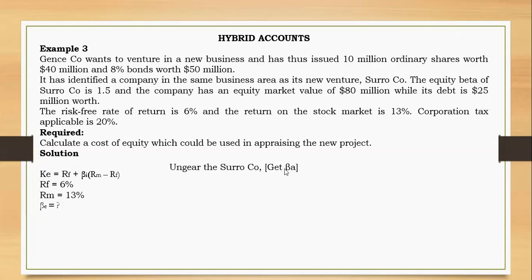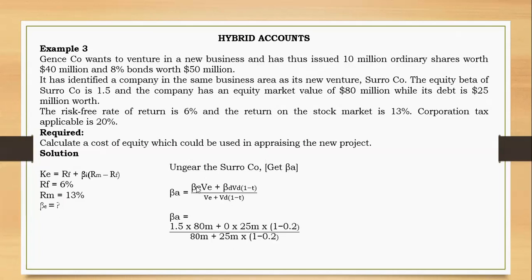To ungear Suro's equity beta: asset beta equals equity beta times value of equity, plus debt beta (zero) times value of debt net of tax, over total value. Plugging in: equity beta = 1.5, value of equity for Suro = 80 million, debt beta = 0, value of debt = 25 million, tax rate = 20%. This gives asset beta = 1.5 × 80 ÷ (80 + 25 × (1 − 0.2)) = 1.2.